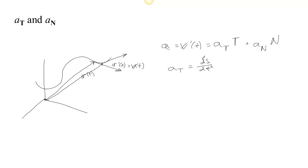s is how far you've gone along the curve. So ds/dt would be how fast you're going along the curve, and d²s/dt² would be how much you're speeding up or slowing down along the curve.